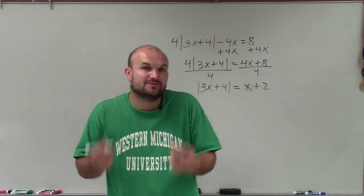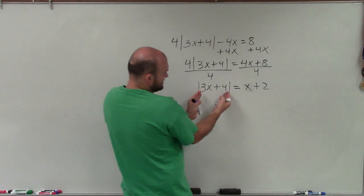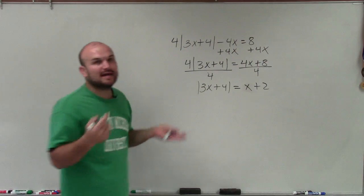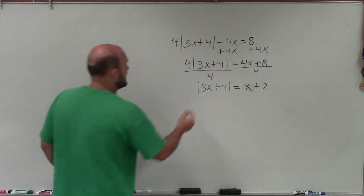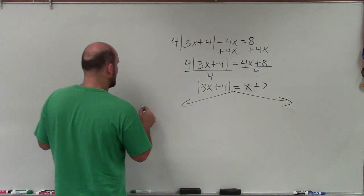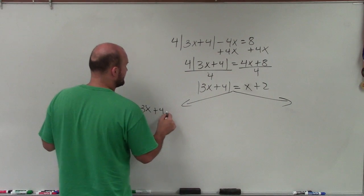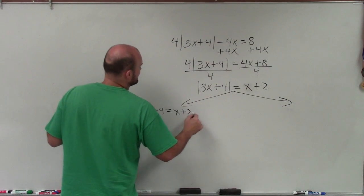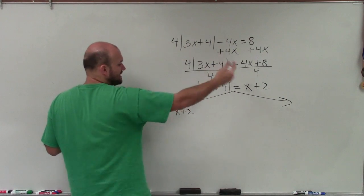So therefore, I need to create my two cases. One where the value inside my absolute value is positive, and one where that value is negative. When we create our two cases, we can now get rid of the absolute value. Because that's exactly what the absolute value is telling us: this value could be positive or negative, but it's going to have the same solution.